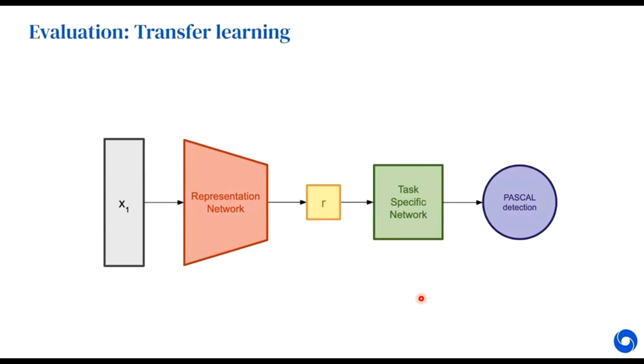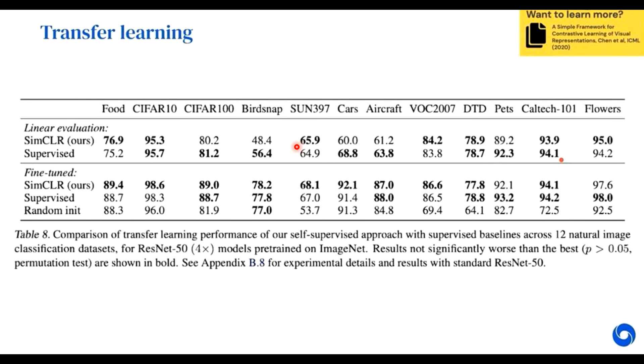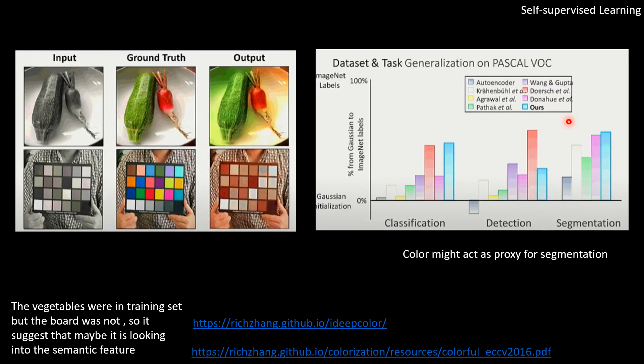And the third approach, the most intuitive one, is transfer learning, where we have learned representation on one dataset or one task and you transfer it to other datasets or to other tasks. For example, the representation could be learned on, say, ImageNet classification and it could be transferred to Pascal detection. So this is an example where the learned representations are transferred to different datasets or tasks.